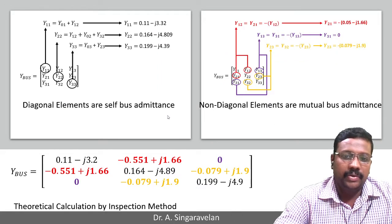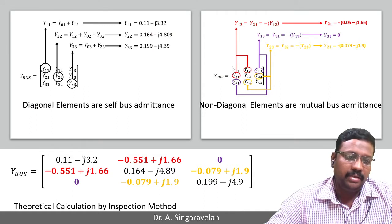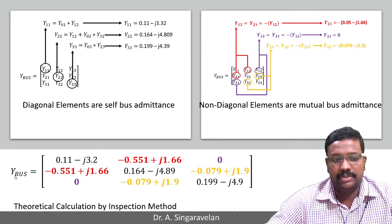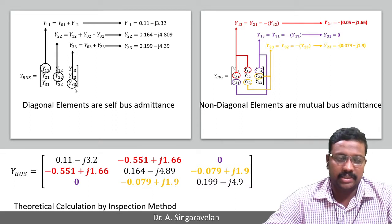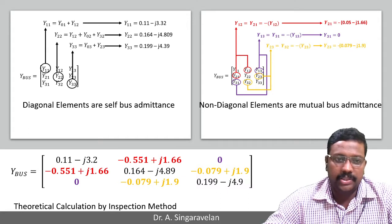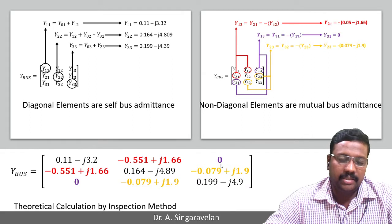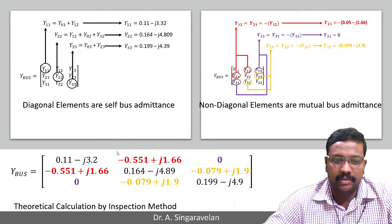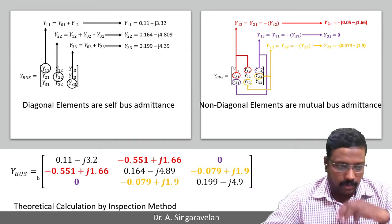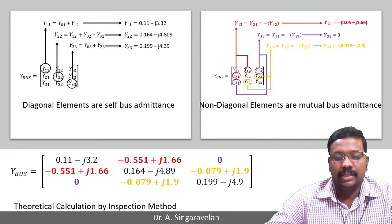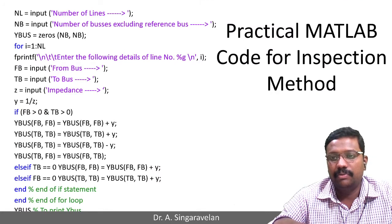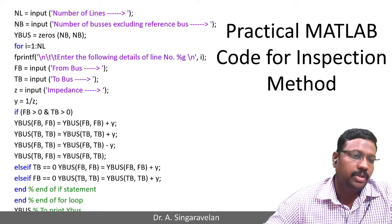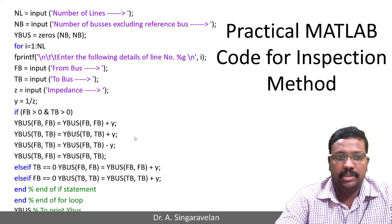After completing this, you can see the diagonal elements are placed in the Y-Bus matrix. In this Y-Bus matrix found by the inspection method, the diagonal element is the summation of all admittances connected to that bus, and the off-diagonal element is the negative of the line admittance. This is the theoretical calculation for the given problem. The same can be done with MATLAB.